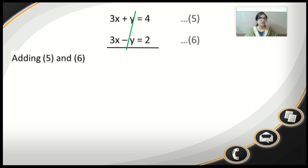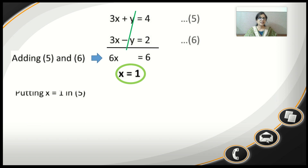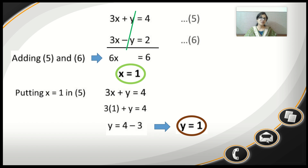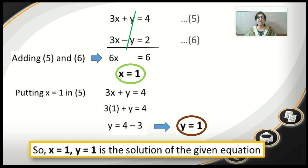Adding equations 5 and 6 cancels y, leaving 6x equals 6, so x equals 1. Substituting x equals 1 into equation 5: 3 plus y equals 4, so y equals 1. Therefore x equals 1 and y equals 1 is the solution of the given equations.